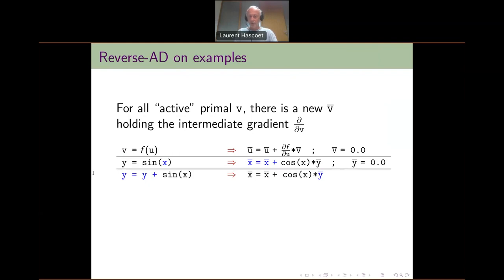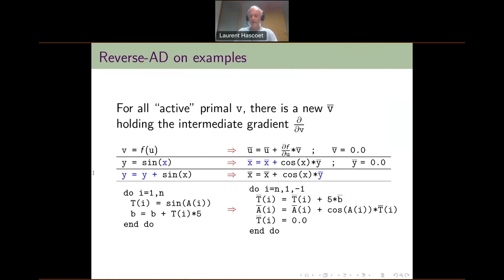So there is a duality that needs to be underlined: the reads of the original code become increments in the differentiated code, and vice versa — the increments in the original code become plain reads in the differentiated code. To stress this notion of reverse differentiation further: for a loop, the reverse differentiated code iterates in the reverse direction from n to 1, and the second instruction of the original loop gives birth to the first instruction of the differentiated loop, while the first instruction of the original program becomes the last pair of instructions of the differentiated program. So everything goes in reverse.